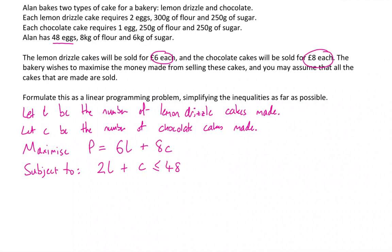Now for flour. We need 300 grams of flour for each lemon drizzle cake and 250 grams of flour for each chocolate cake. We have 8 kilos of flour available. Notice the units here - that needs to be less than or equal to 8,000 because I've written that in grams. I'm going to divide that through by 50, so we get 6l plus 5c is less than or equal to 160.